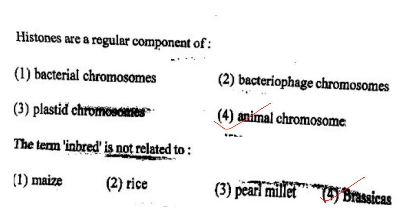Next one: Histones are a regular component of option 1, bacterial chromosome; option 2, bacteriophage chromosome; option 3, plastid chromosome; option 4, animal chromosome. Answer is option 4: animal chromosome.